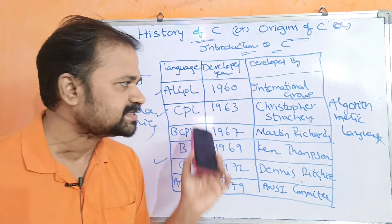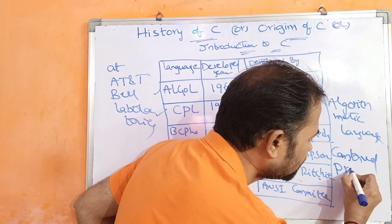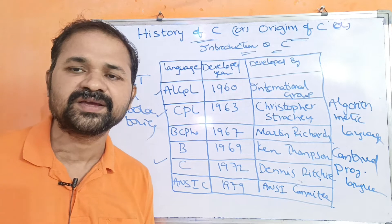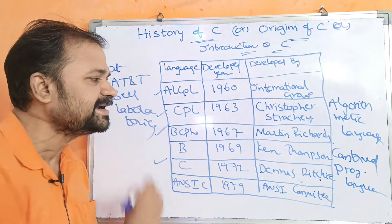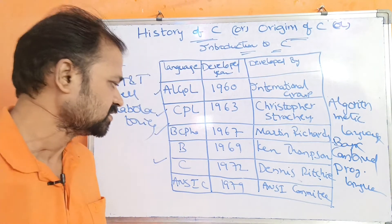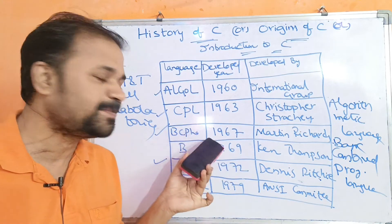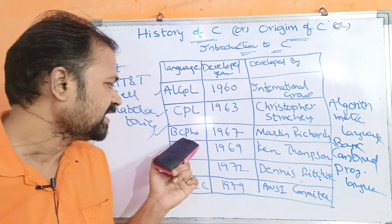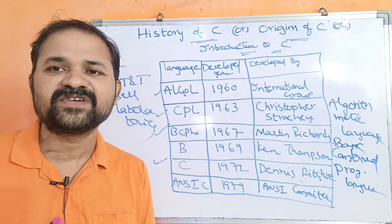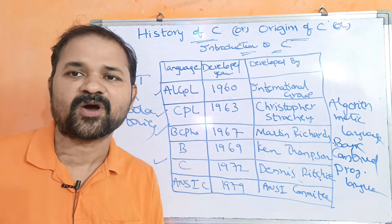CPL has many problems. CPL stands for Combined Programming Languages. Because of those problems, BCPL was designed. BCPL stands for Basic Combined Programming Languages. BCPL was derived from CPL and also supports CPL features.